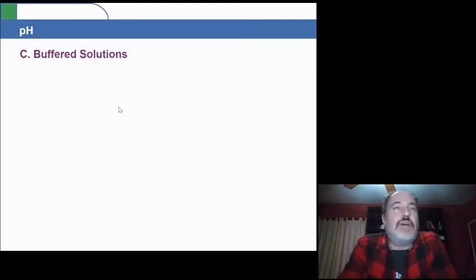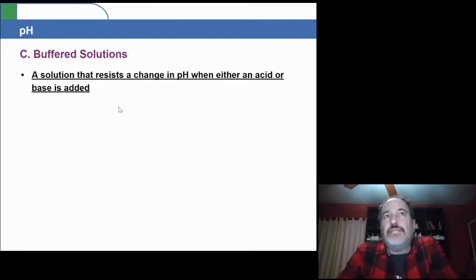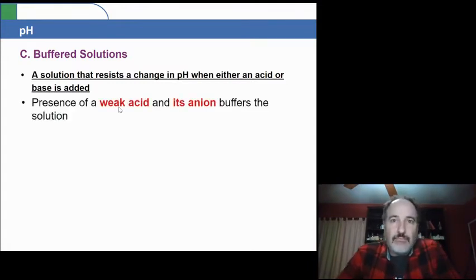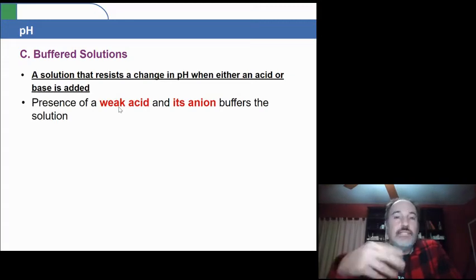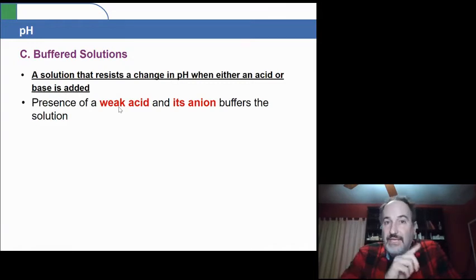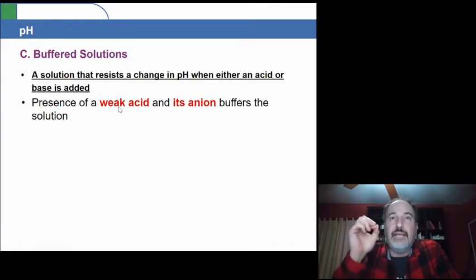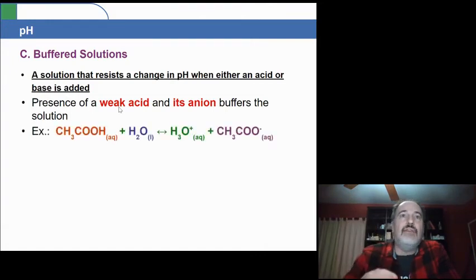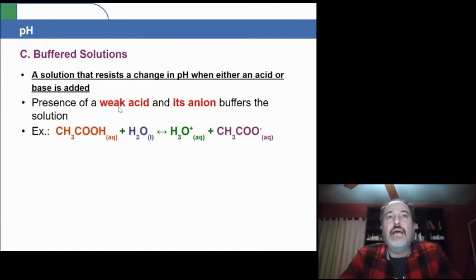Now, the next thing I want to talk to you about is a common situation known as a buffered solution. This is a solution that resists a change in pH when either an acid or a base is added. Basically, this is what is known as a weak acid. It is an acid that is in equilibrium. That's the key thing about weak acids. It's an acid in equilibrium. And it tends to have high amounts of both the acid and its anion that it turns into.